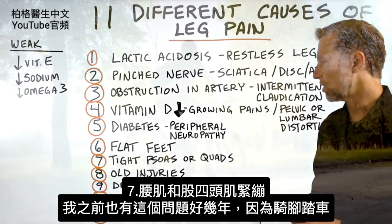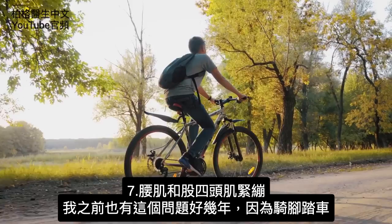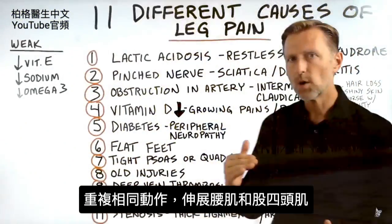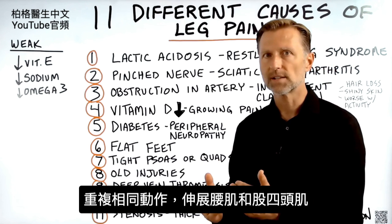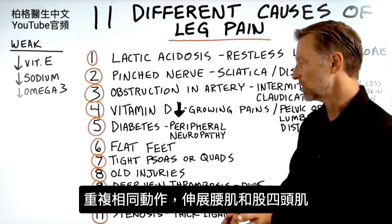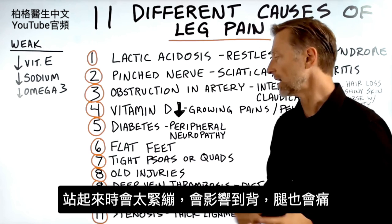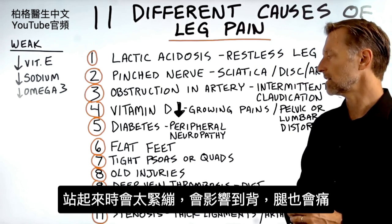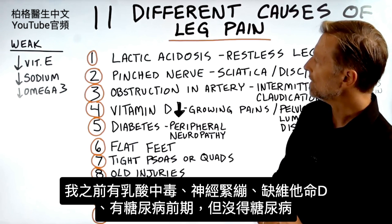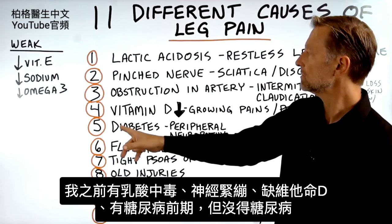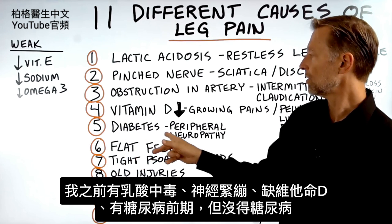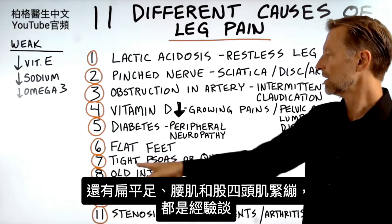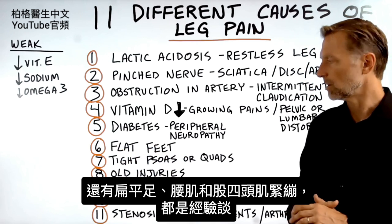Number seven: tight psoas and quads. I had this problem for many years from riding a bike — doing the same motion over and over strengthens your quads and psoas, and when you stand up those muscles are too tight, throwing off your back and referring pain down to the legs. Looking back, I personally experienced lactic acidosis, pinched nerve, flat feet, was pre-diabetic, and had tight psoas — so I'm speaking from experience.